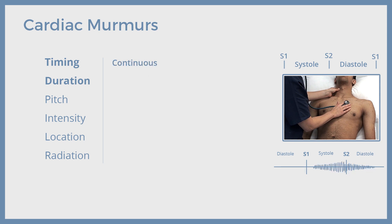Coming to the final type of murmur based on duration — continuous murmur. This is not a feature murmur of valvular diseases, but is heard in some vascular abnormalities such as patent ductus arteriosus and arteriovenous fistula. This is also called a machinery murmur and is heard continuously during both systole and diastole.